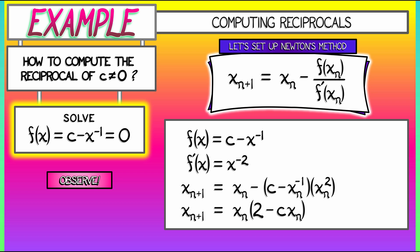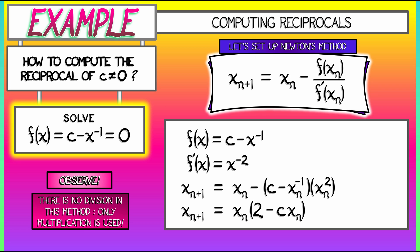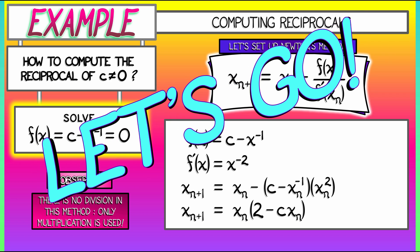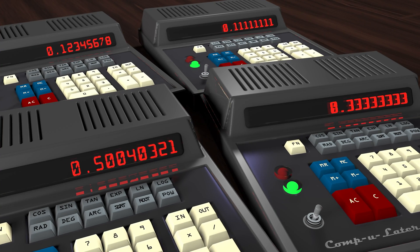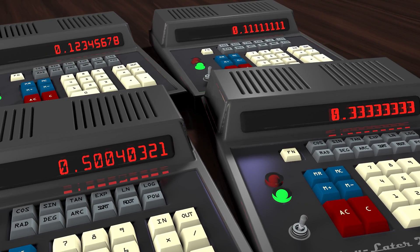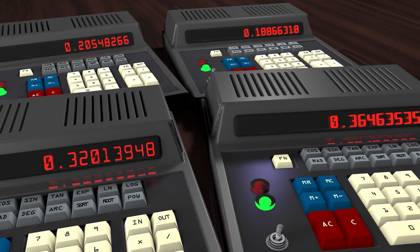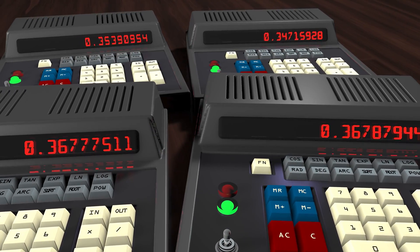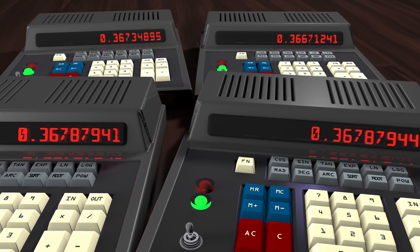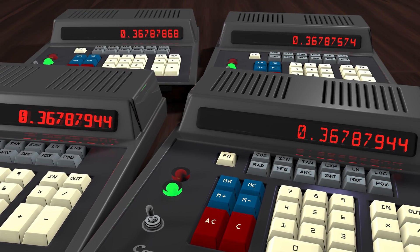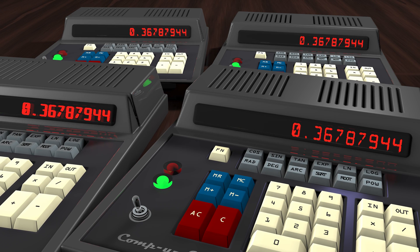This is super cool—there's no division involved here. There's only addition, subtraction, and multiplication. No division at all. So for example, if we want to compute the reciprocal of e, we take a few starting guesses and plug them into our calculator using this Newton update. After just a few iterations, we converge to 0.367879…, which is the reciprocal of e.